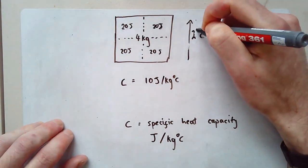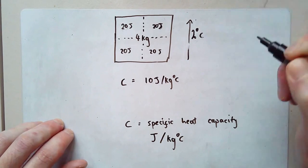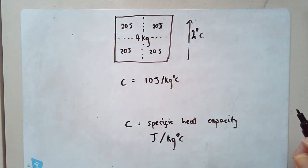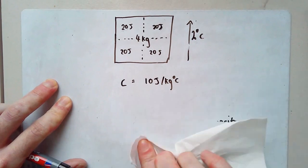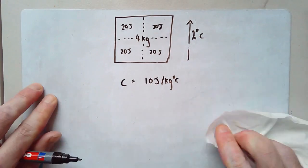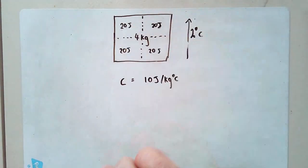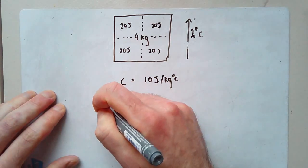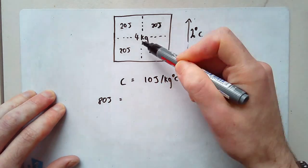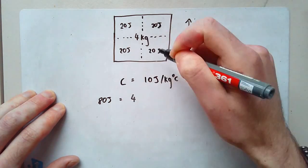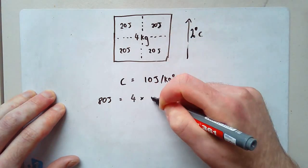We can turn that really easily into an equation. How much energy do we have in total here? 80 joules. What is 80 joules? It's this mass times this C here, mass four.